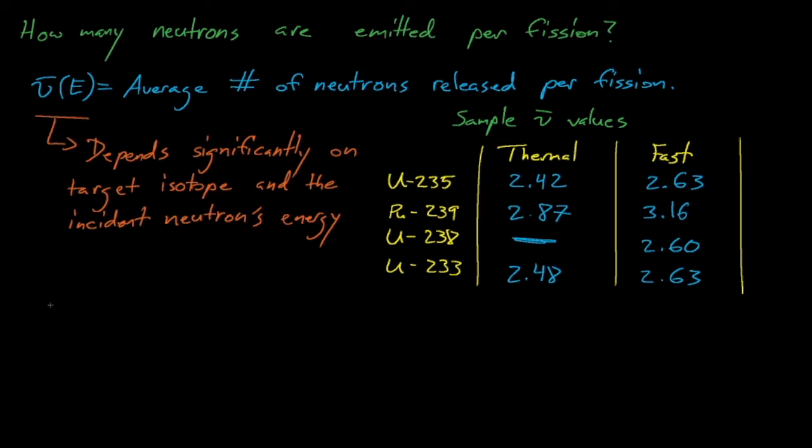This table here, taken from Duderstadt and Hamilton, shows that nu-bar varies significantly depending on whether a fission event was initiated by a thermal or fast energy neutron, and also that nu varies significantly as a function of the fissile species. Note that there is no nu-bar for uranium-238 for thermal neutrons because uranium-238 requires a fast neutron to fission. In other words, it is fissionable.